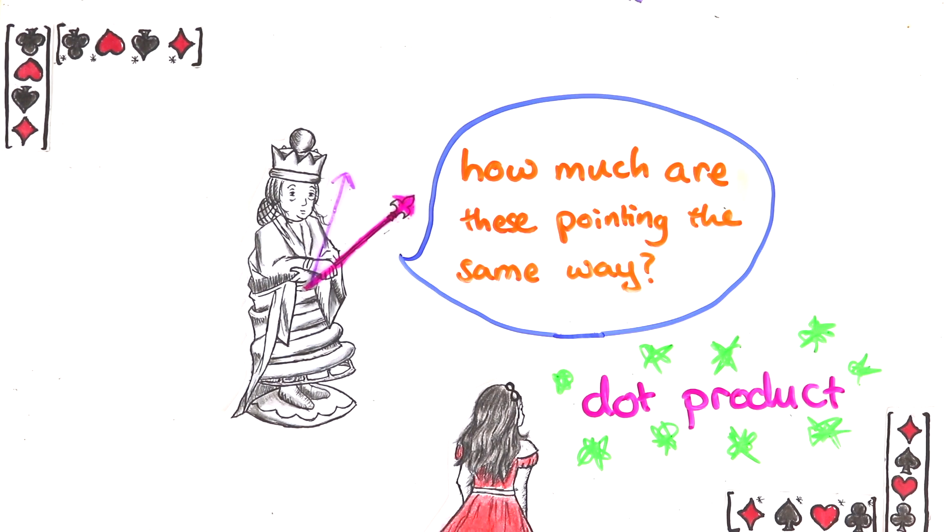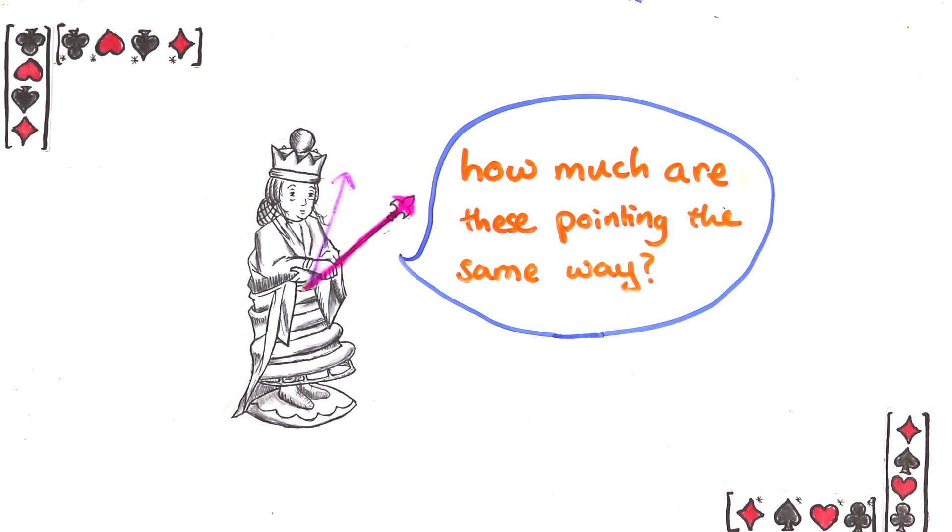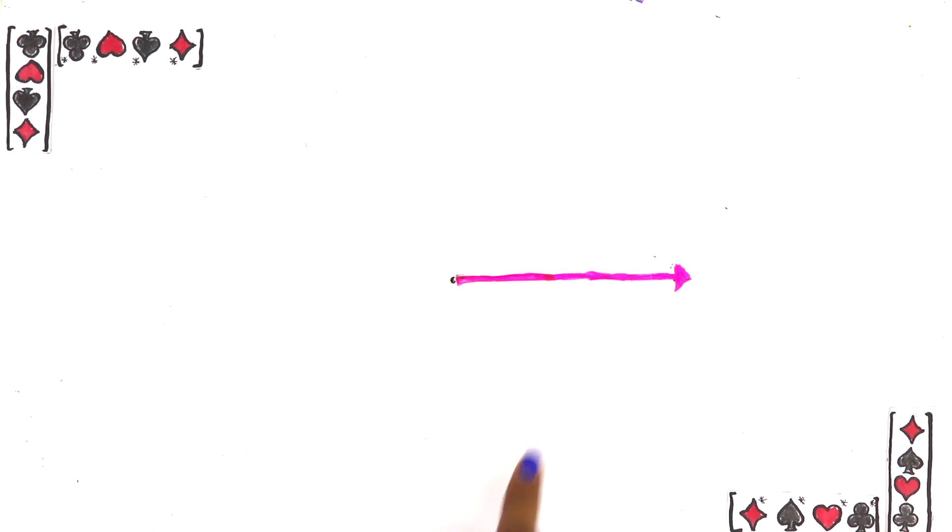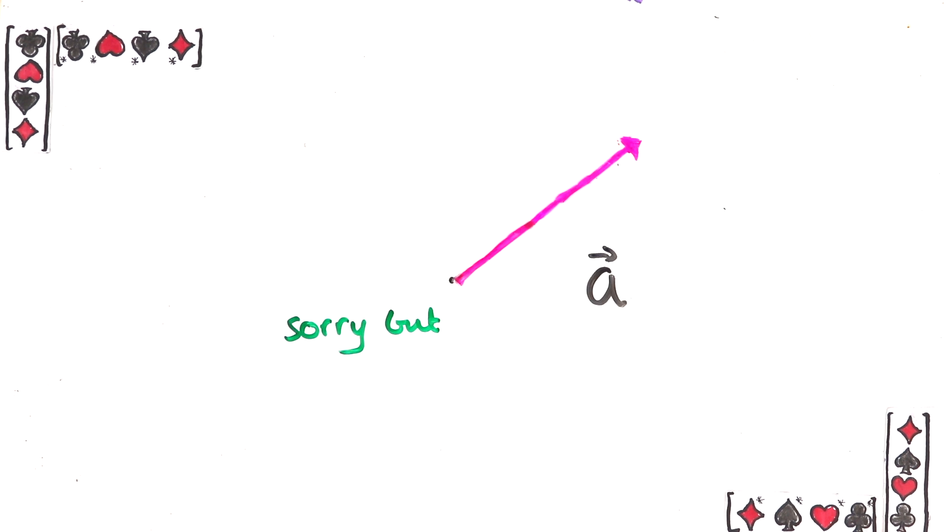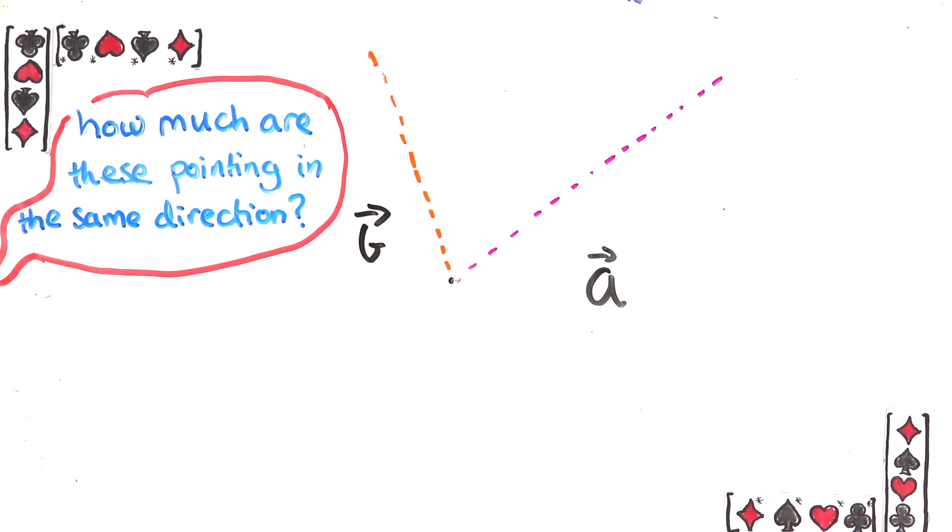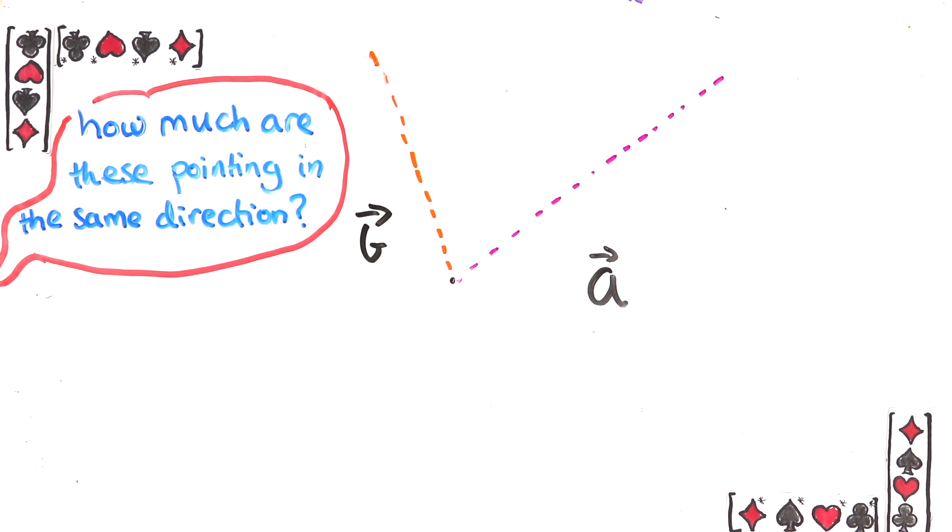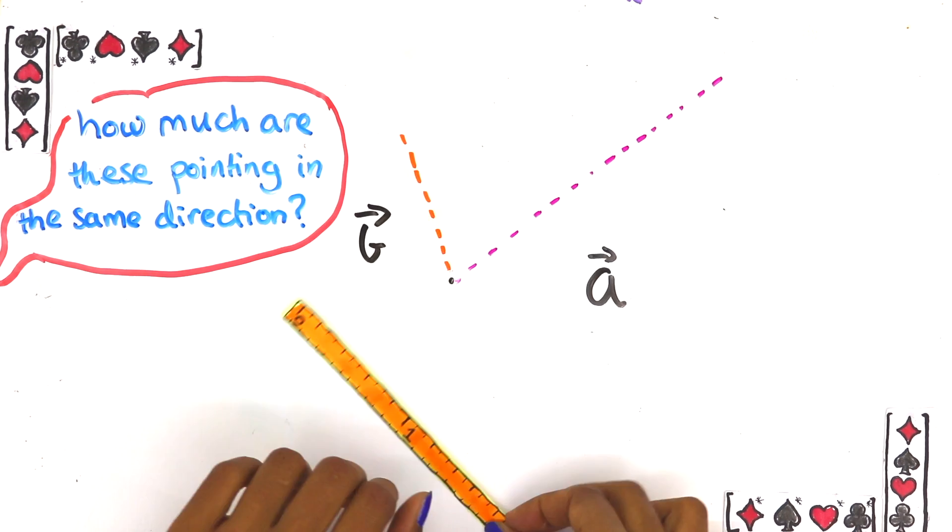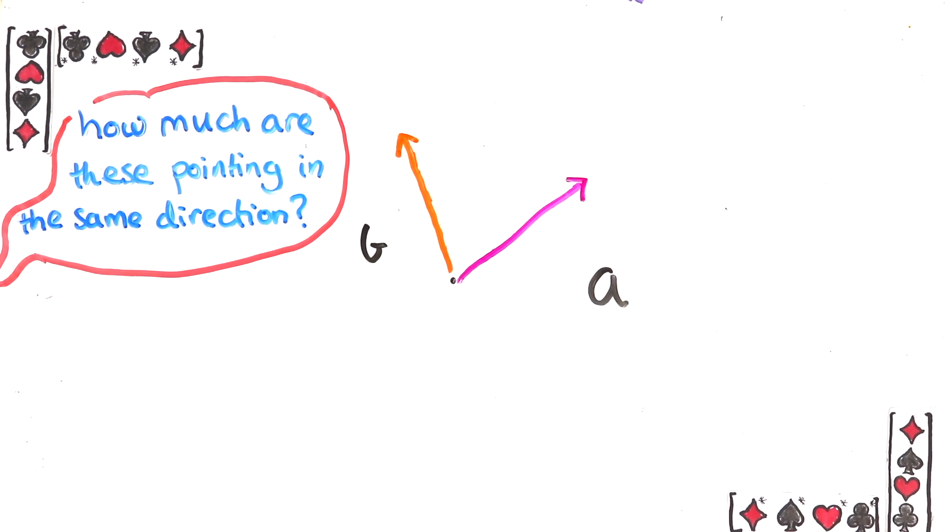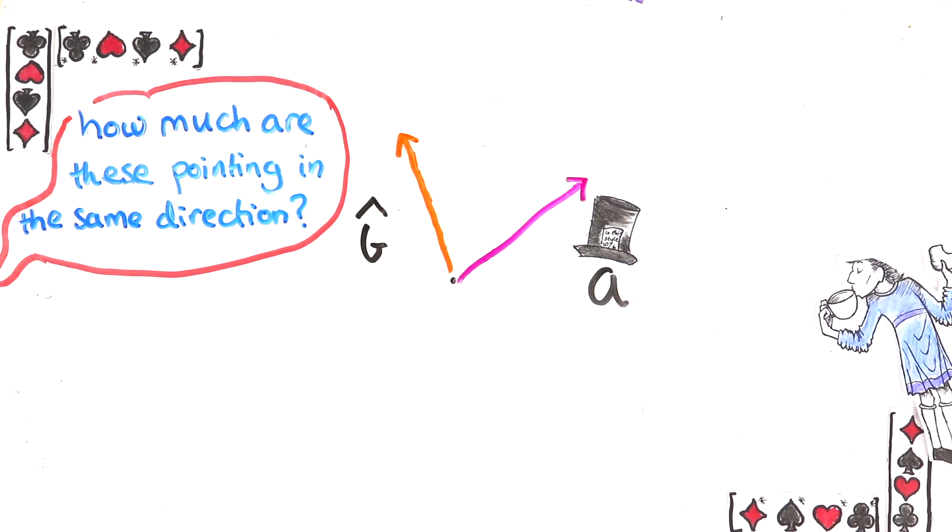But first we should make this question more precise. Vectors have two properties, length and direction. But our question is only about directions so let's forget about the actual length of the vectors for now and replace them with vectors of length 1 that are pointing in the same direction. I'll put a hat on them so that we remember that we've done this.